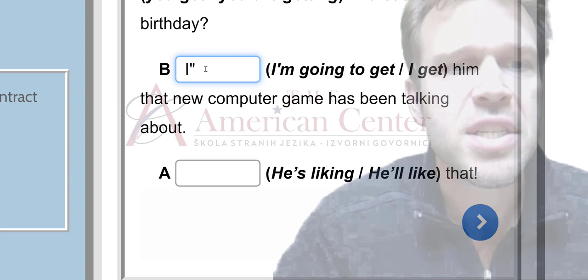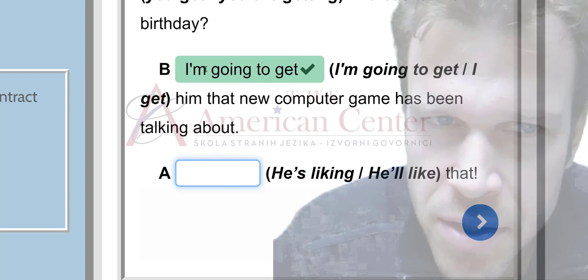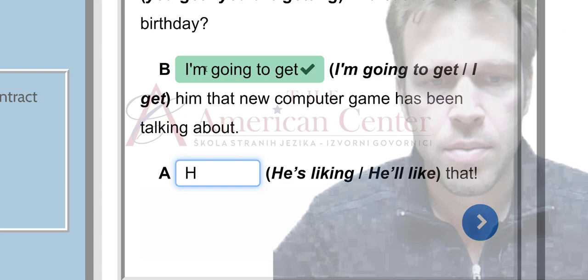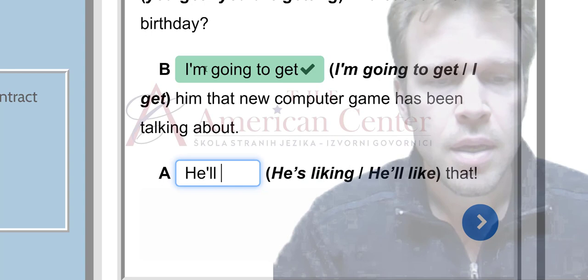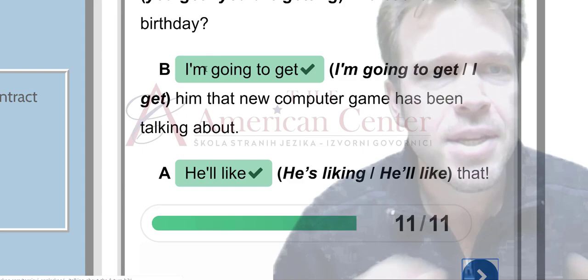I'm going to get or I get him that new computer he has been talking about. Well, this is very simple. I have decided this, correct? Yes. I have decided and I'm going to do it. It is more of my intention. There is no specific time or date. It is my intention to get him this computer. Oh, he'll like that. Now, this is my personal opinion. It's my prediction. So, oh, he'll like that. All right? So, we're giving prediction based on our personal feelings or opinions. So, we use will for that.